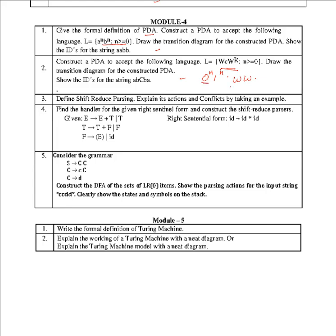Define shift reduce parsing, explain its actions and conflicts by taking an example. This is also an important question. Find the handler for the given right sentential form. This is important - that is what I said, LR 0 items. You are designing the CLR. You may get SLR problem or CLR problem.